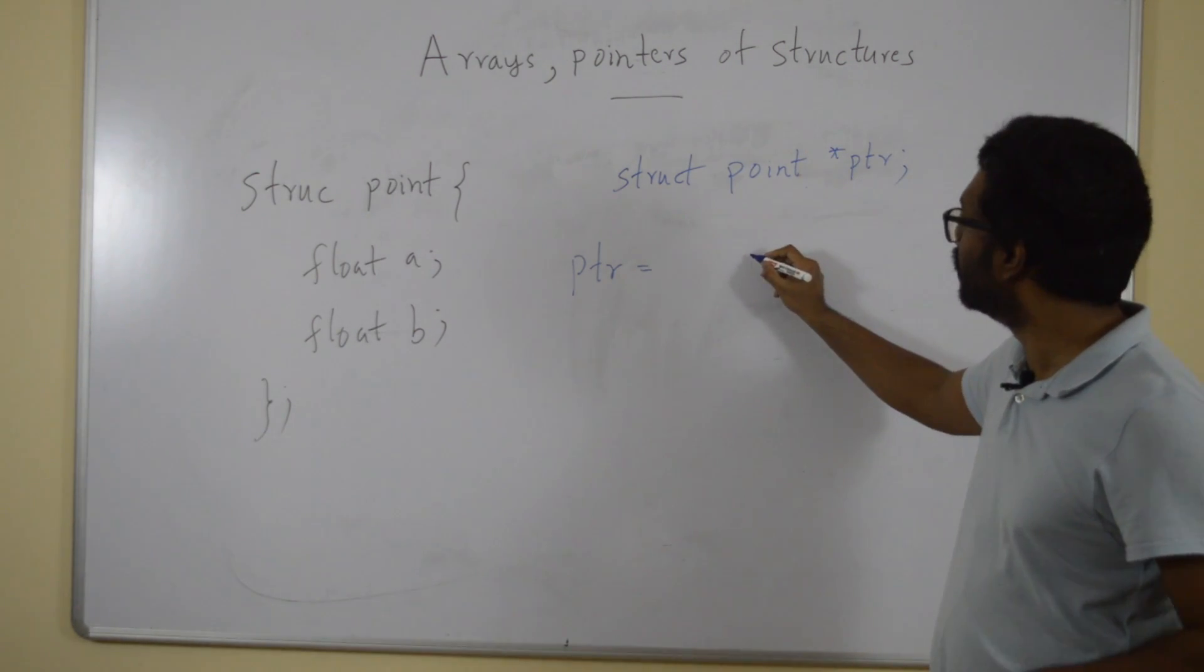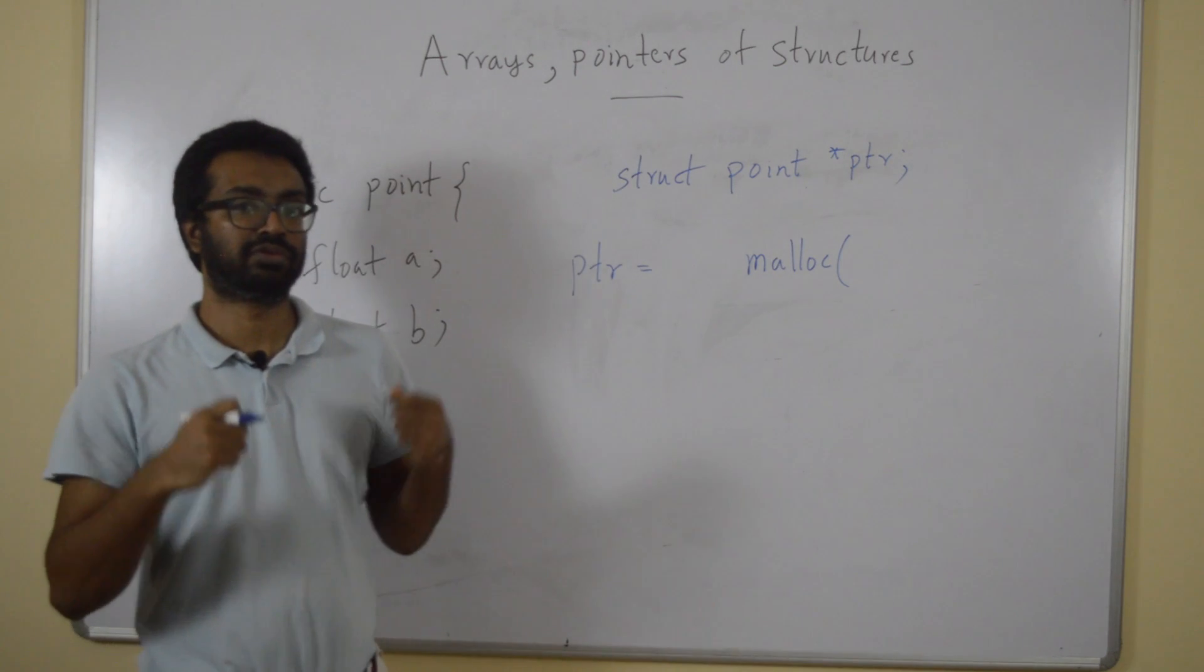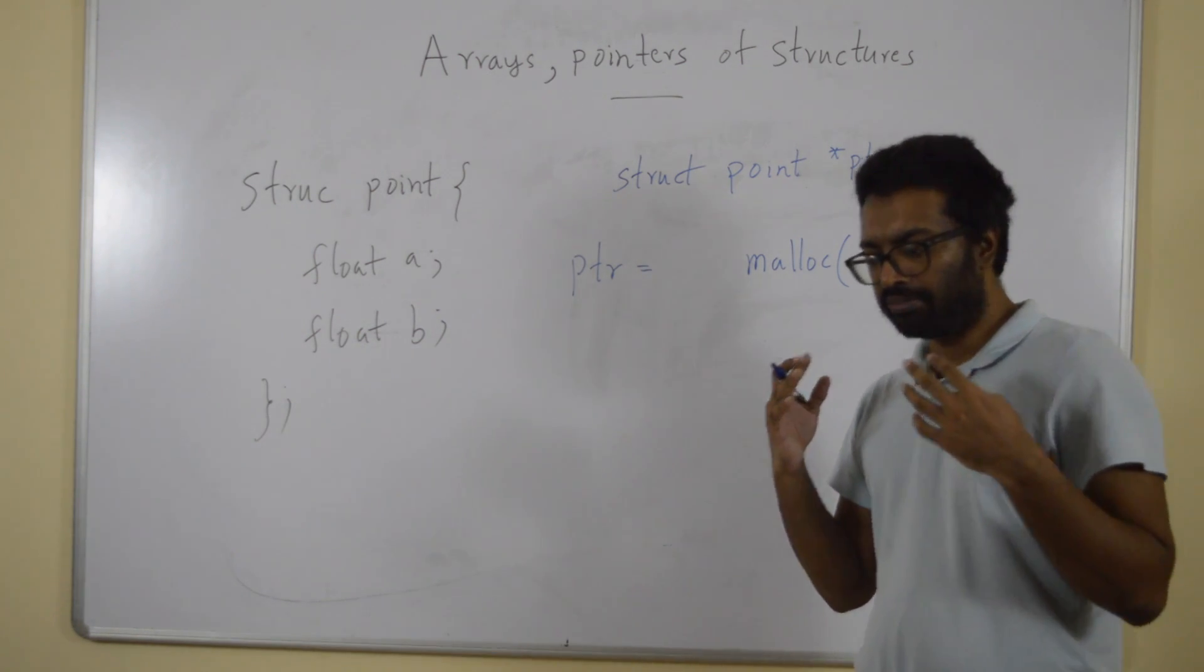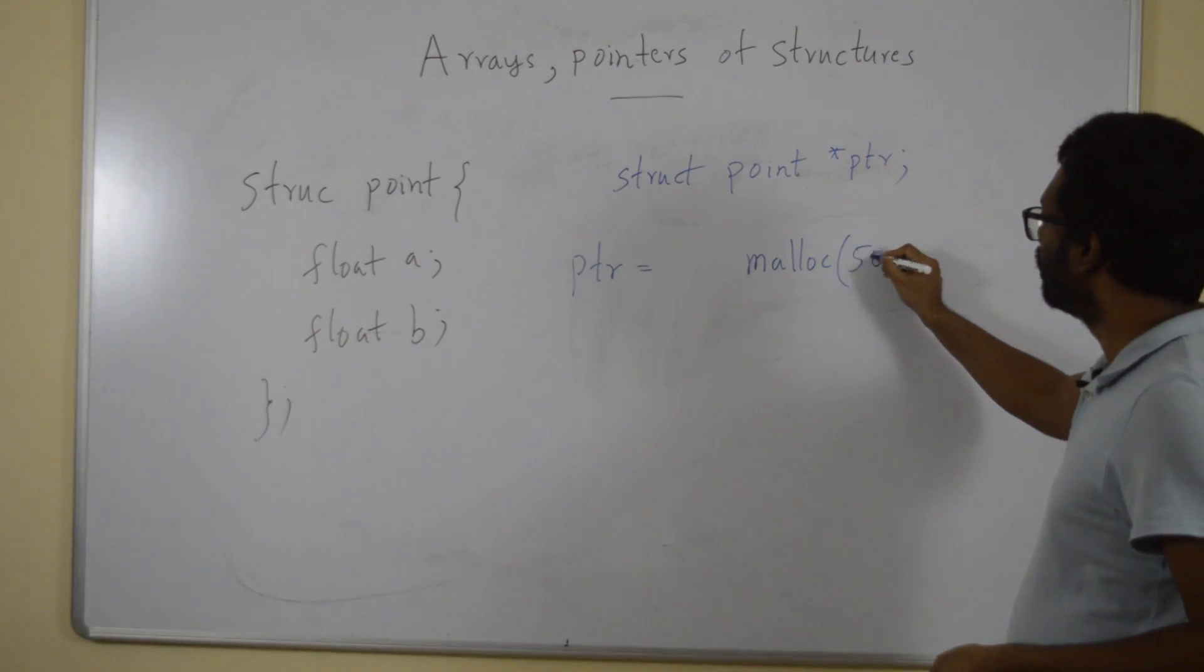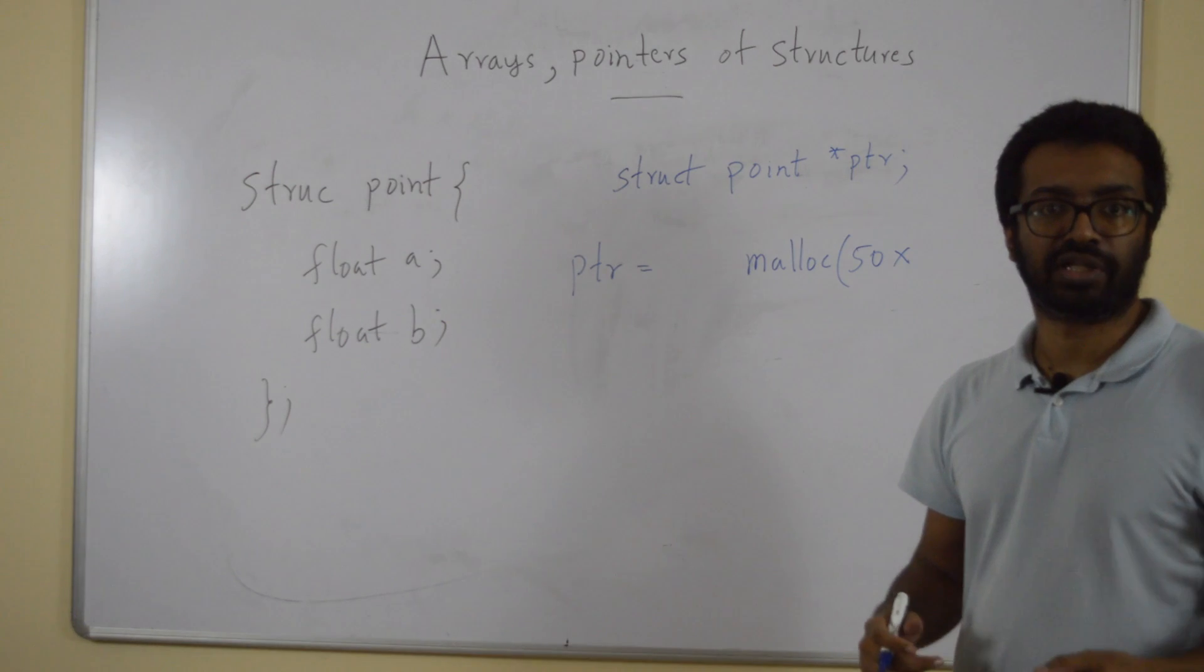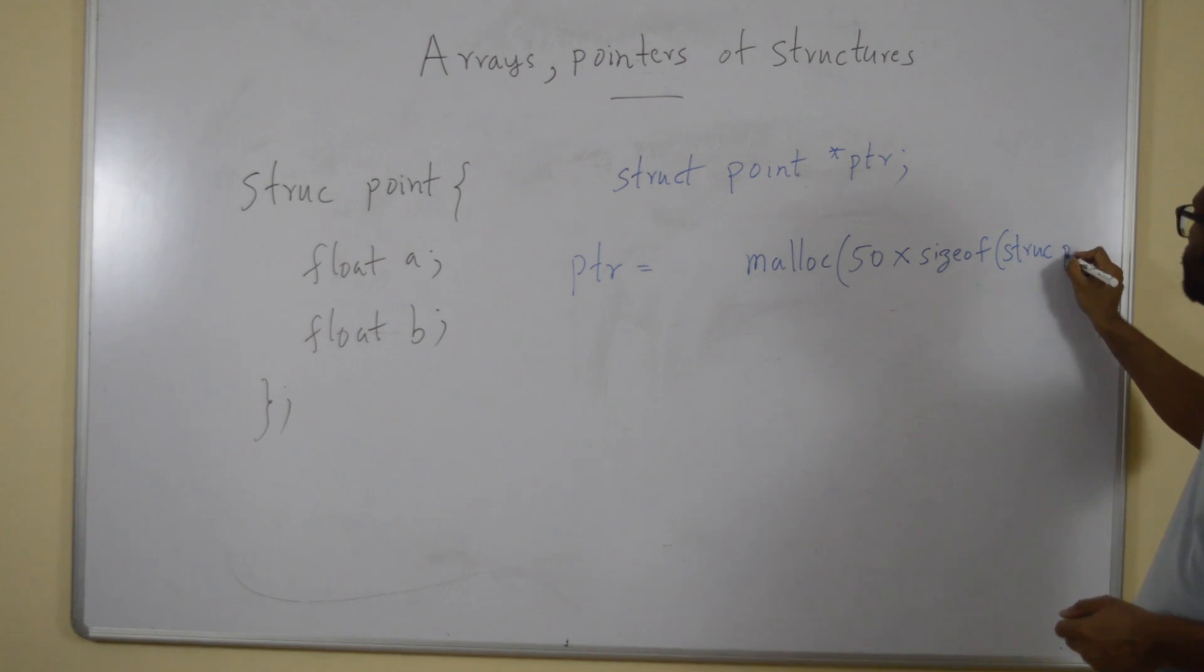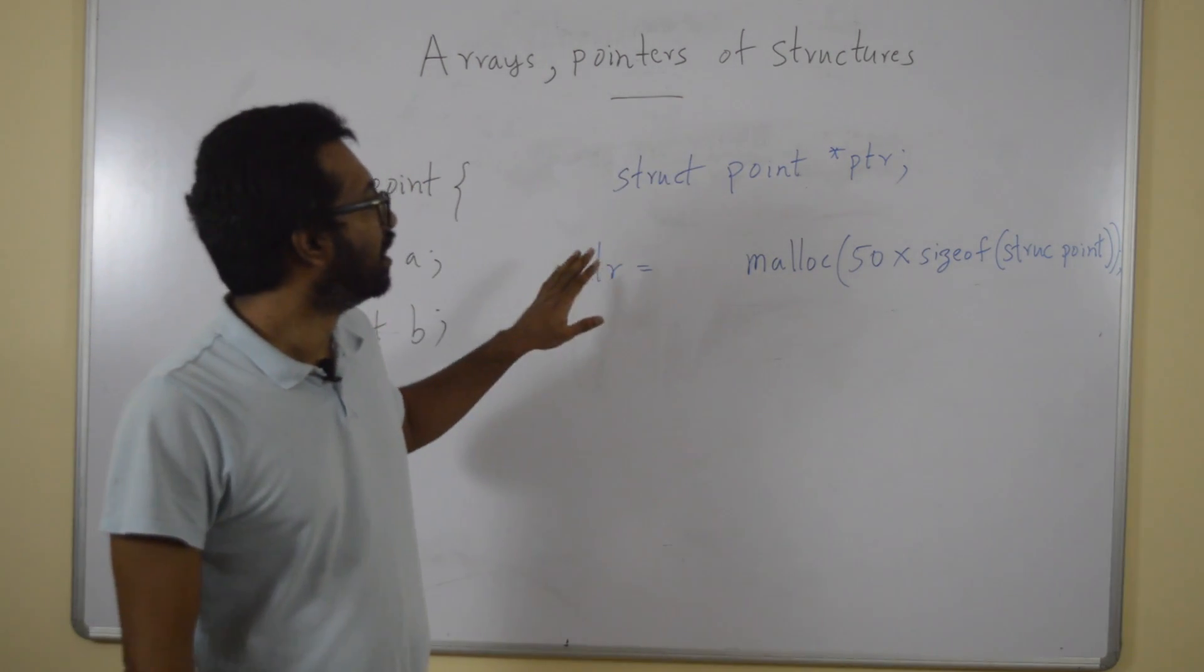We have to use that function and what does malloc take as input? The number of bytes required to be allocated. Now, let's say I want to allocate 50 such points. I have to tell this malloc function that I want memory for 50 such structures. So I should say 50, but how much does each struct take, how much memory is required for each struct? I have an operator for that. That's the sizeof operator. I will use the sizeof operator and write 50 into sizeof struct point.